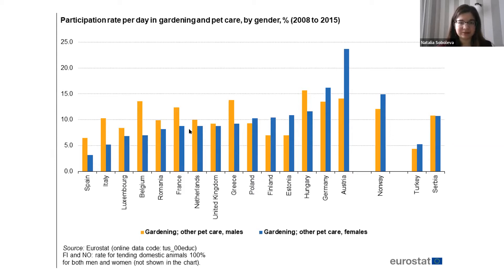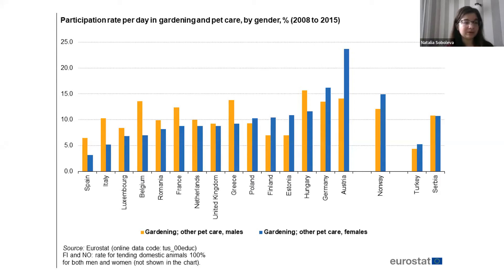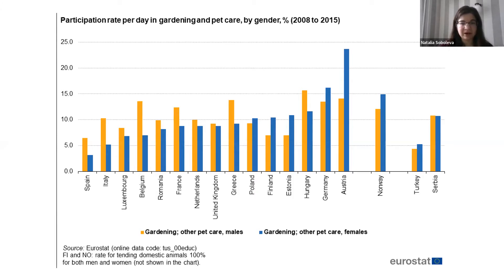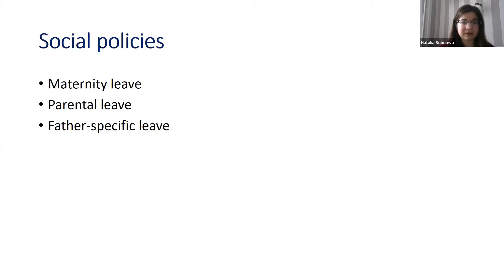The only area where men do more is participation in construction, which is not a regular daily job. There are also differences in gardening — in some countries like Spain, Italy, and Greece, men do more gardening, which looks more like a hobby. The key point is that women more often do the more complicated, difficult, and less pleasant household tasks.